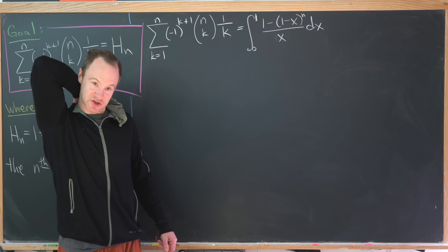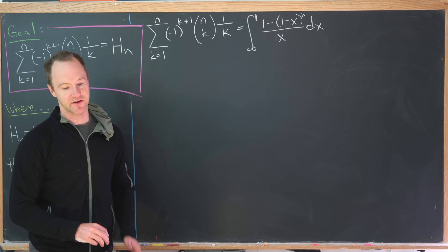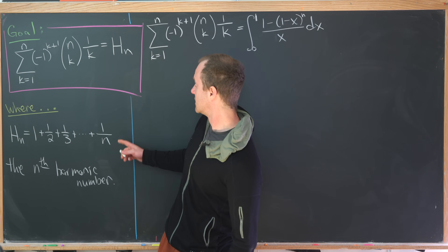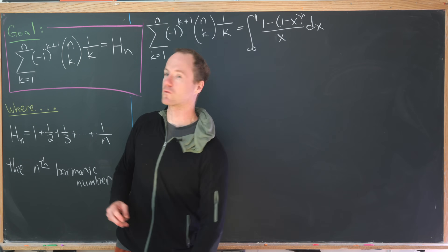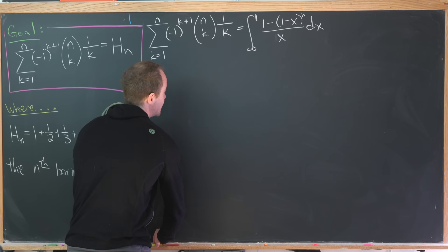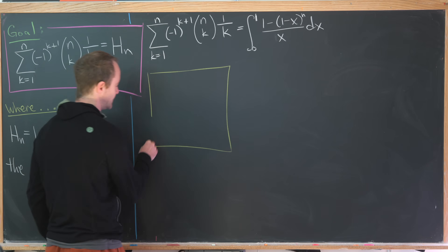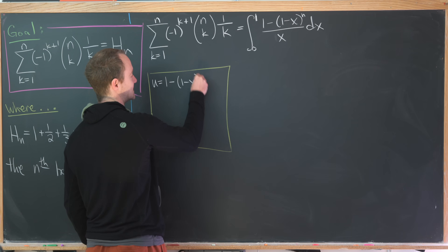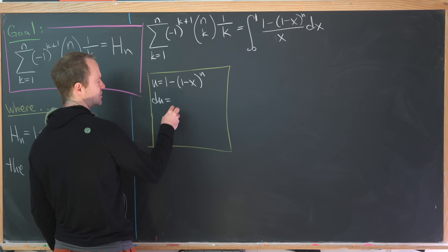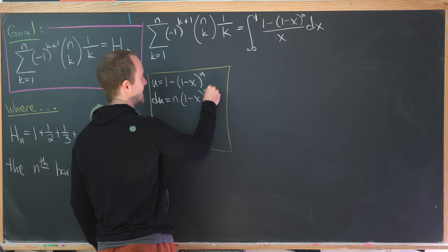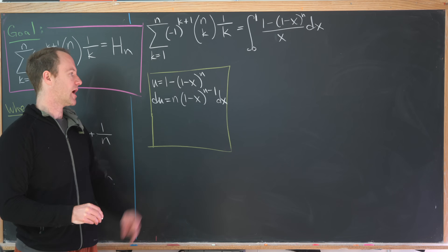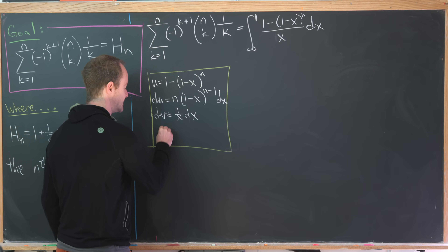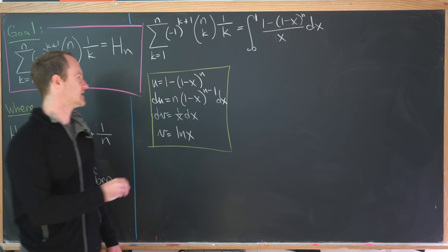We'd like to evaluate this integral using integration by parts. We set u = 1 - (1-x)^n, so du = n(1-x)^(n-1) dx — a couple of minus signs cancel. We set dv = (1/x) dx, giving v = ln(x). Let's see where that leads.